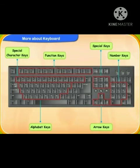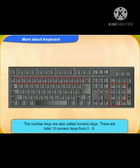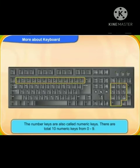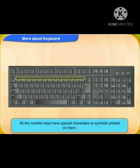The keyboard has special character keys, function keys, special keys, number keys, arrow keys, and alphabet keys. Number keys are also called numeric keys. There are a total of 10 number keys from 0 to 9, in two sets. All number keys have a special character or symbol printed on them.